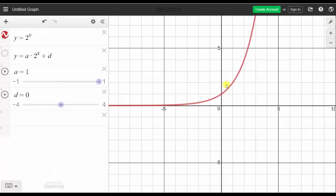Here we have the graph of y equals 2 to the power of x. Now we will graph the function y equals a times 2 to the power of x plus d, where when a is 1 and d is 0, we get the same exponential function which is now graphed in blue.